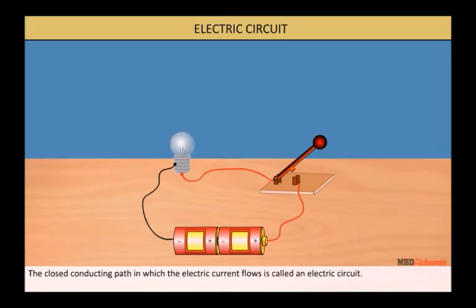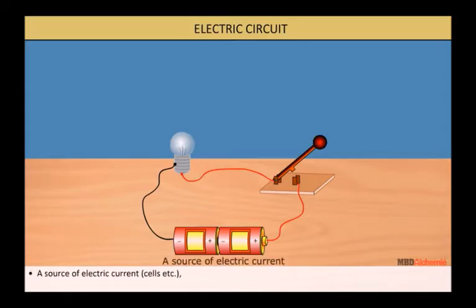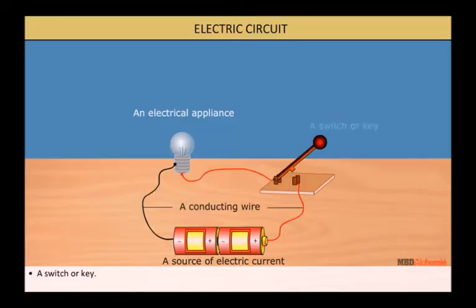Electric circuit: The closed conducting path in which electric current flows is called an electric circuit. An electric circuit constitutes a source of electric current (cells, etc.), a conducting wire, an electrical appliance (bulbs, etc.), and a switch or key.